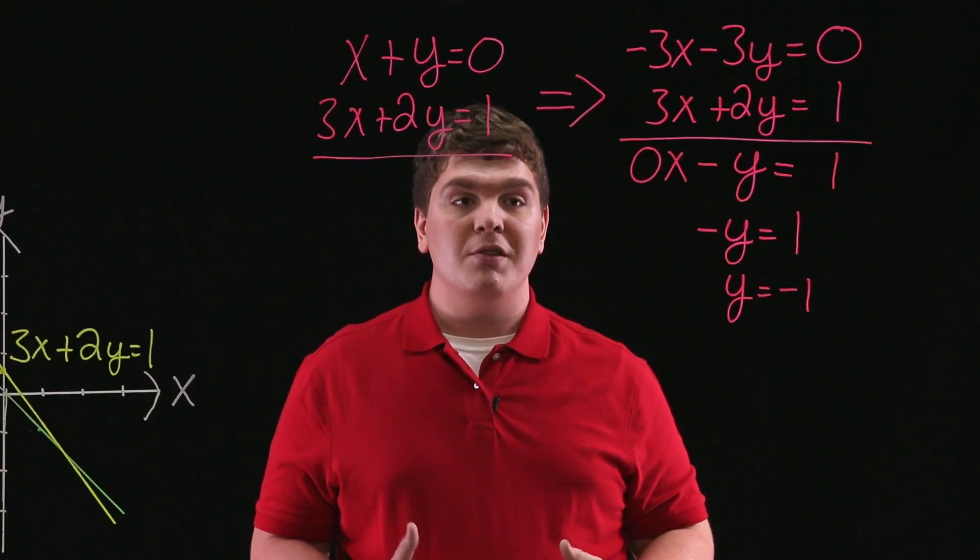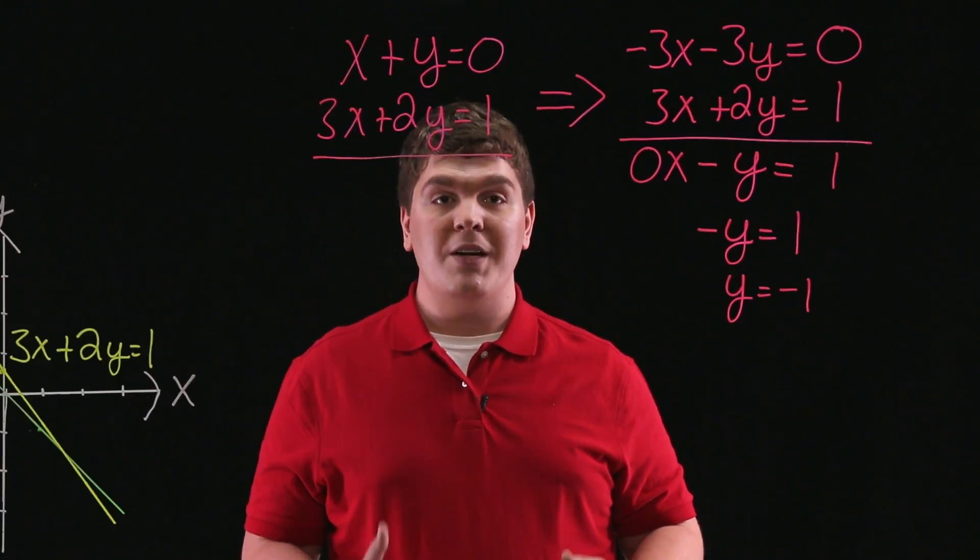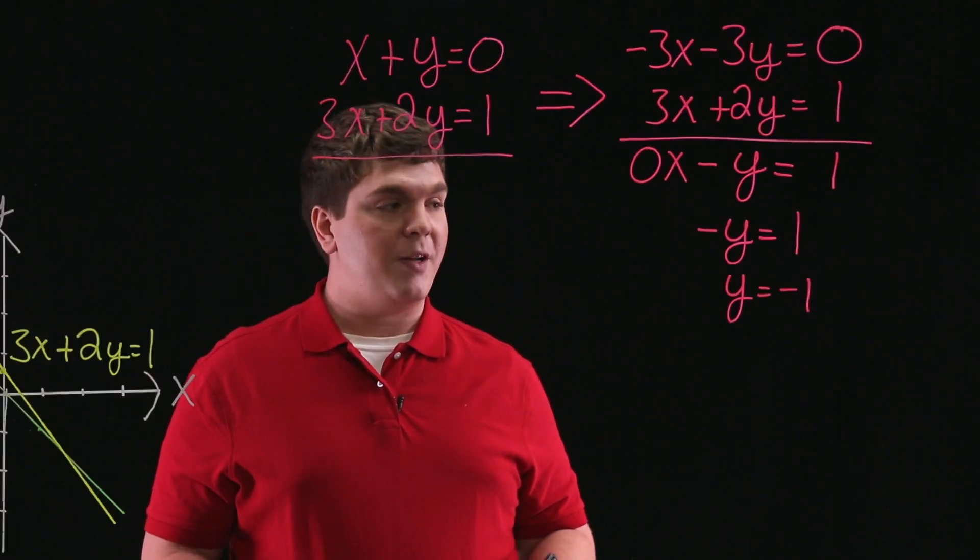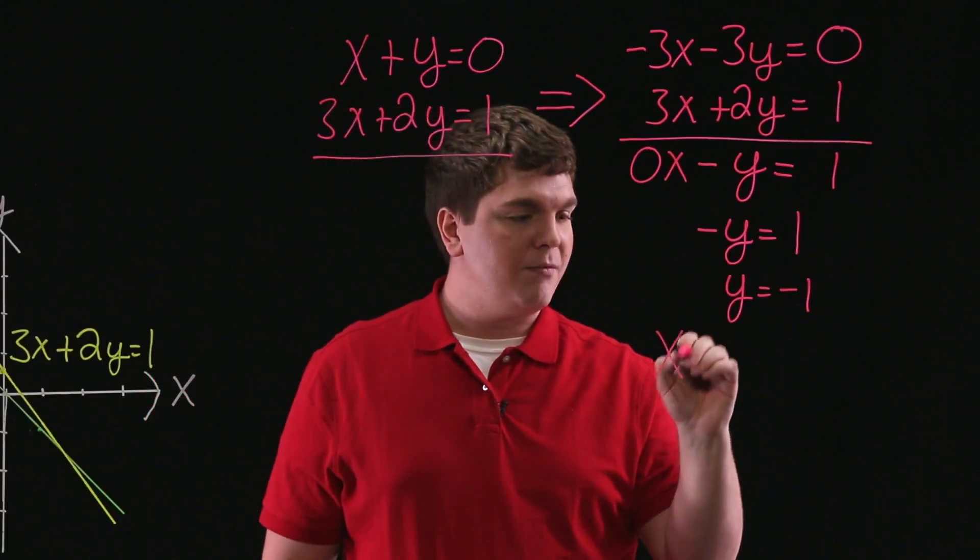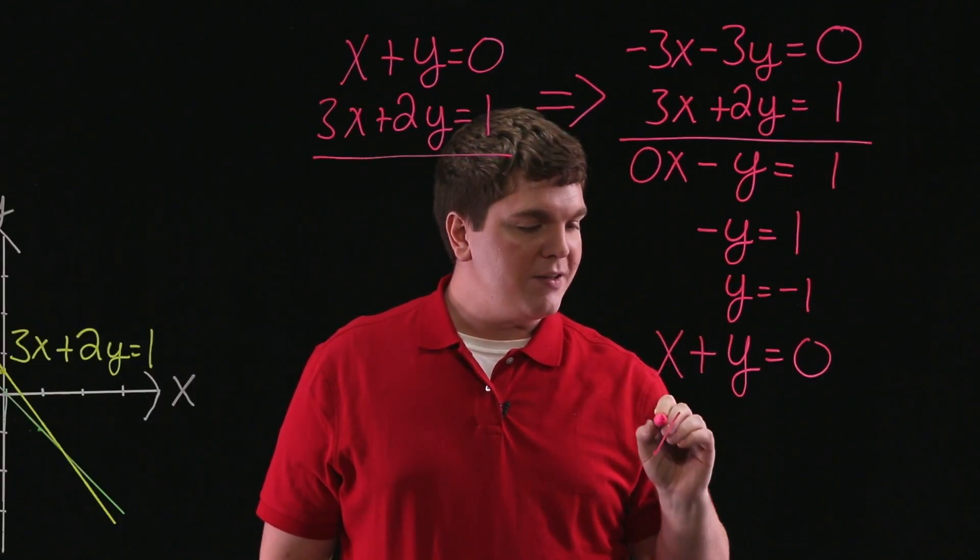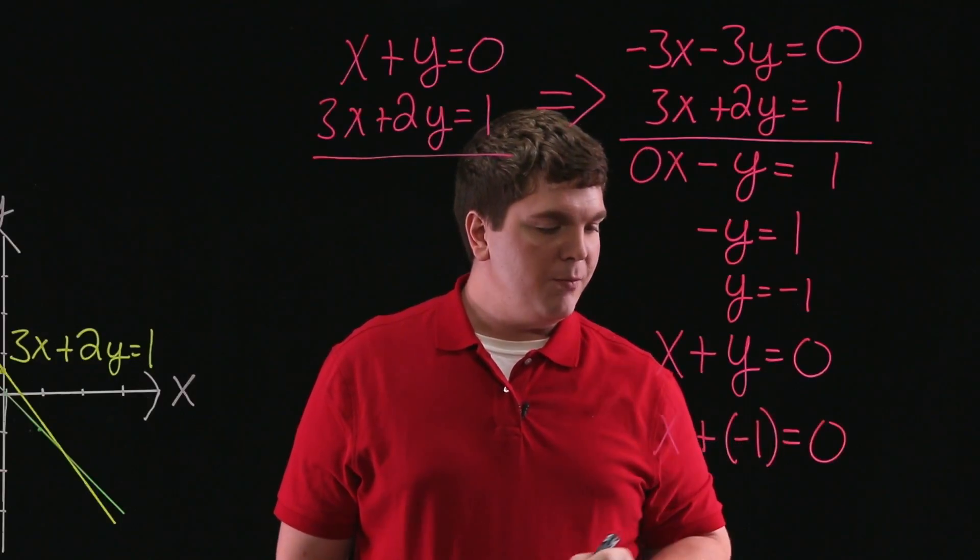Now that we have one of our solutions, we can substitute this back into either of our initial equations to solve for x. Let's substitute it into the first equation, x plus y equals 0. So substituting y into the equation x plus y equals 0, we have x plus negative 1 equals 0.